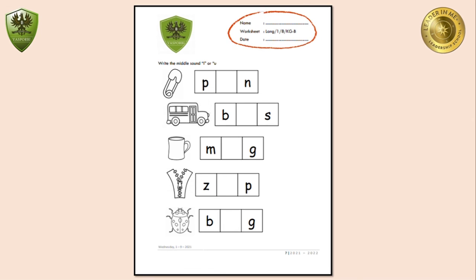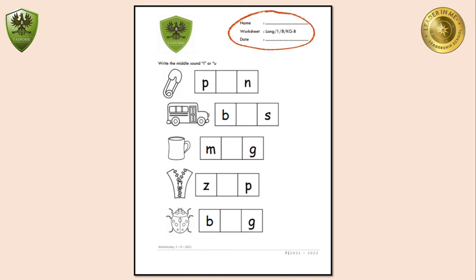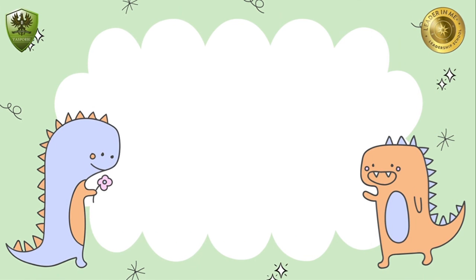Let's go to your worksheet. First, you have to write down your name and date. The instruction is: write the middle sound in each box based on the picture. Let's do your worksheet by yourself. Thank you for your attention and have a nice day!